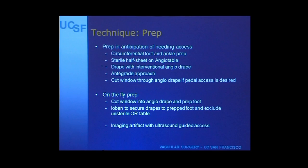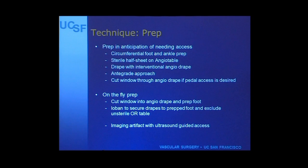In more detail - how do we do it? I like to prep in anticipation of needing to do it. I do a circumferential prep of the foot and ankle, put down a sterile half sheet on the angio table, then drape with the interventional angio drape. That way, if you need the procedure, all you need to do is cut a window into the angio drape and you've got a sterile foot that's exposed without additional prepping or draping. On-the-fly prep can be sloppy - you cut a window, have an unsterile field, prep, lay down an ioband - and when you lay down the ioband you get a lot of air that adds artifact and makes imaging difficult.